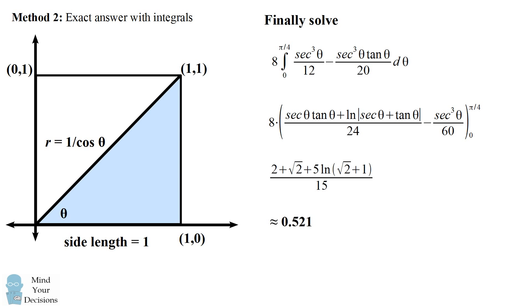And this is approximately .521, which is very similar to what we got in the spreadsheet.